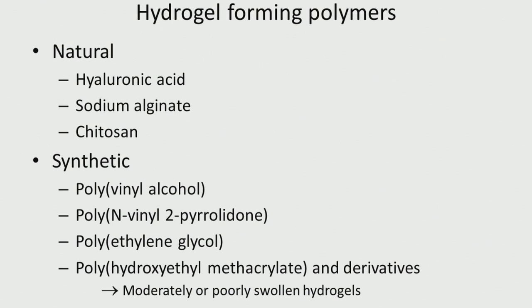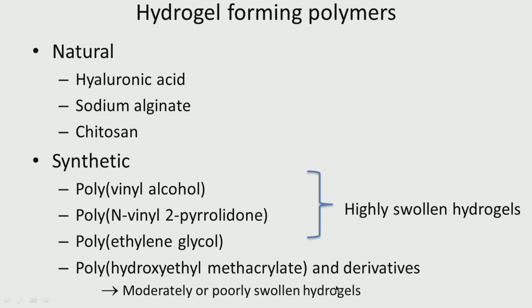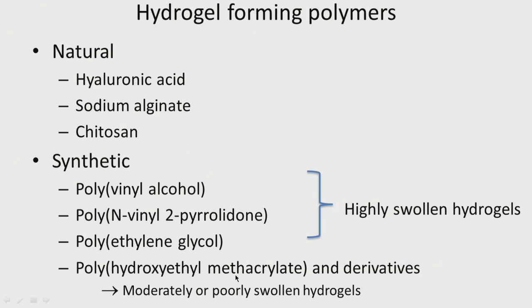Polymers that form hydrogels include natural ones such as hyaluronic acid, sodium alginate, chitosan, and glucan, as well as synthetic ones such as PVA, poly-N-vinylpyrrolidone, polyethylene glycol, and polyhydroxyethyl methacrylate and its derivatives. Carrageenan also forms hydrogels. Some of these produce moderately or highly swollen hydrogels and others poorly swollen ones. Natural and synthetic polymers can be mixed together to obtain the correct properties.